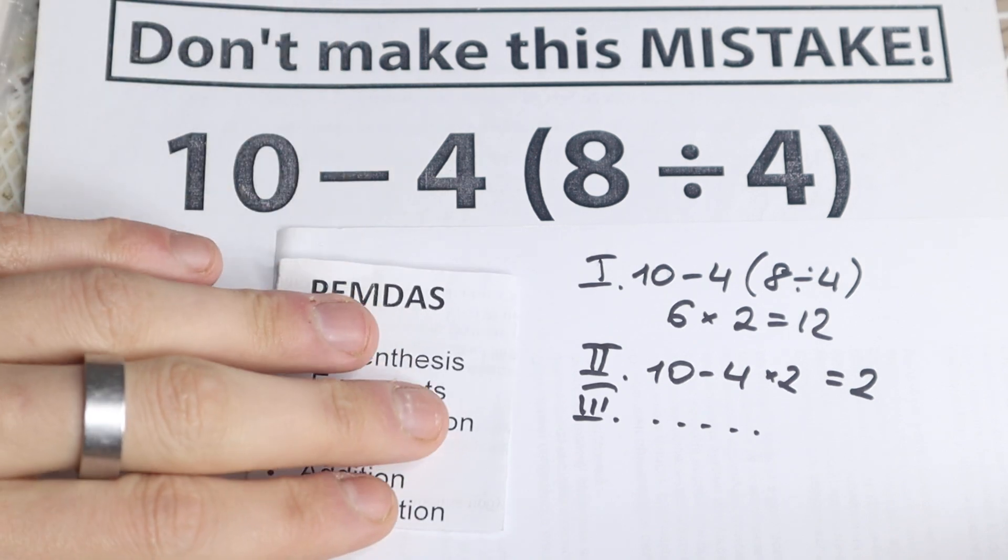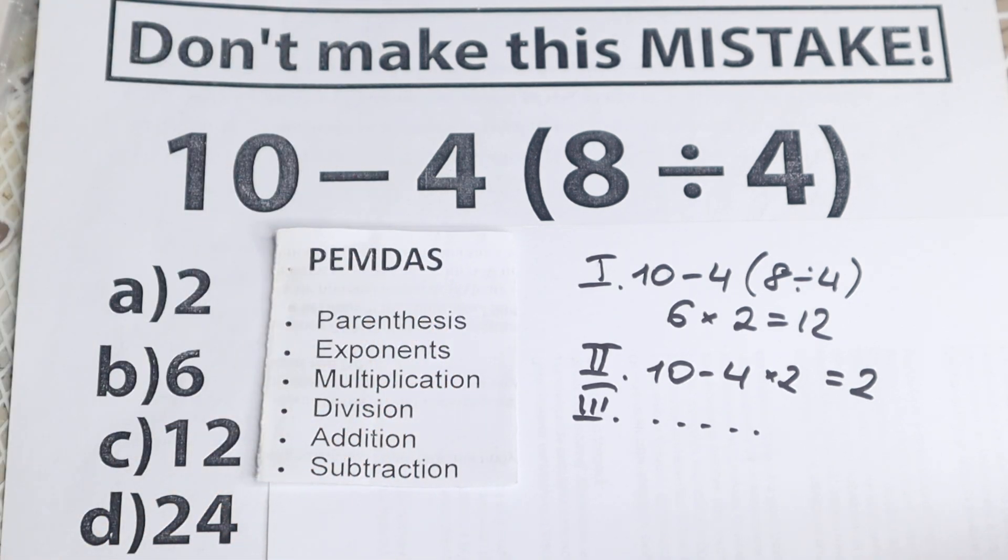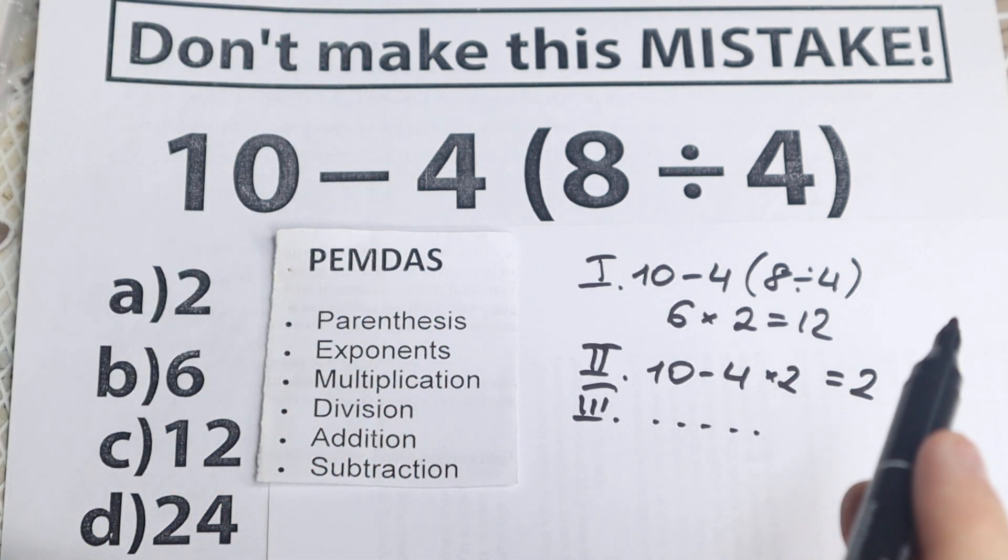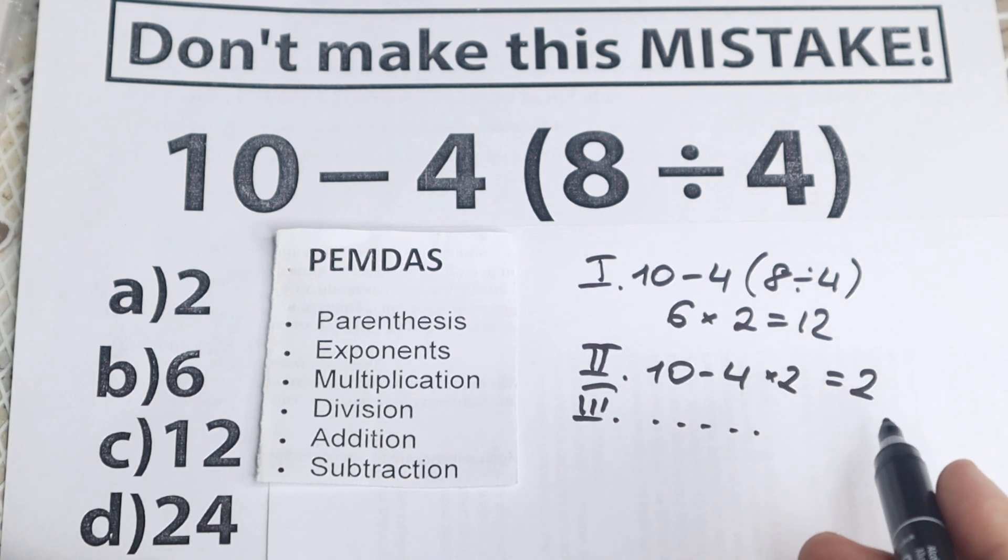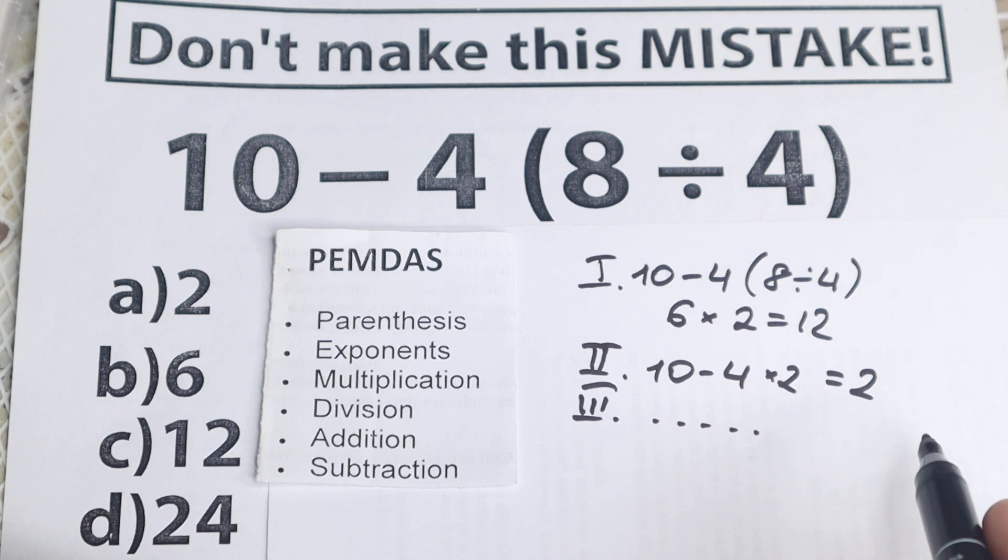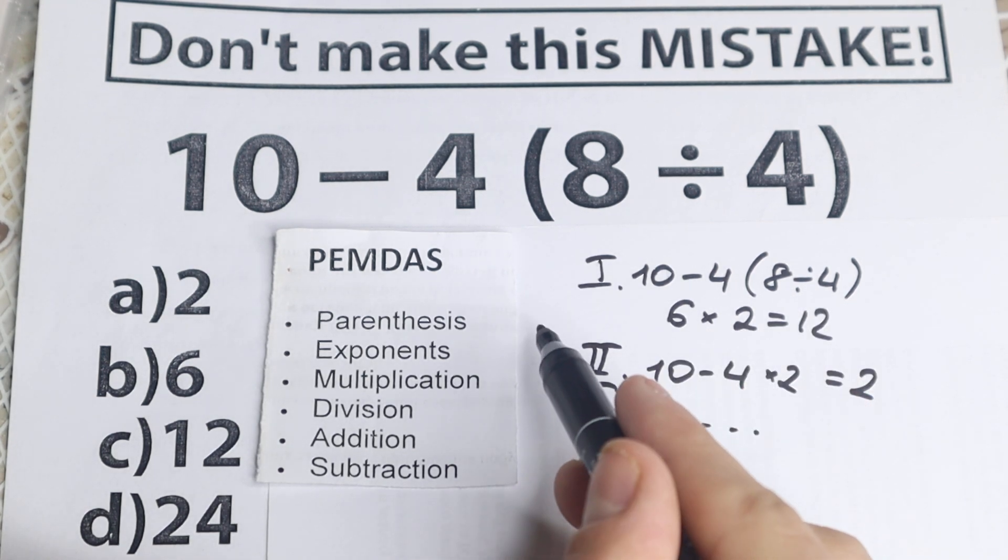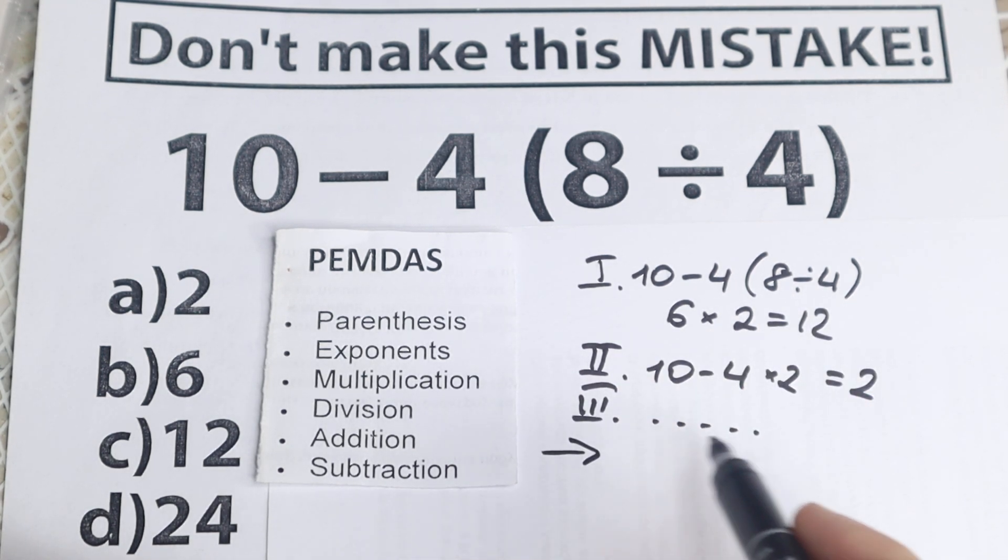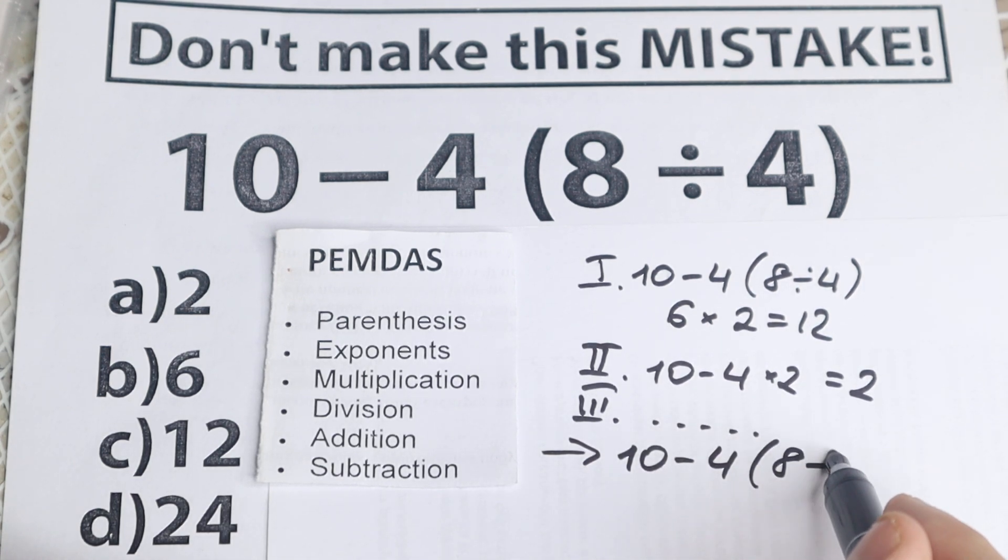And for this question I have this PEMDAS order, and right now we are going to figure out what is the correct order of operations, because obviously whatever order you select is going to create a different answer, right? So we need to understand what is the correct order. Take a look closely. PEMDAS order goes from the top to the bottom, from the left to the right, and I just want to rewrite this problem, so 10 minus 4 and in parentheses 8 divided by 4. So we have this question.